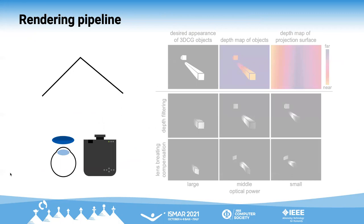The whole rendering pipeline is as follows. In this example, we assume to display two bars on a corner surface.